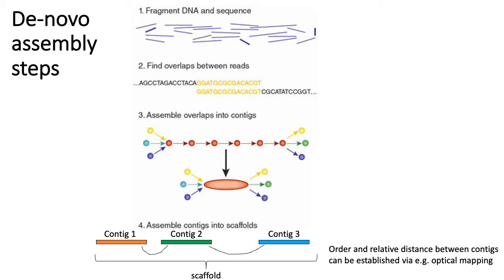The assembly problem is described by steps two through four. After you sequence your reads, you figure out which reads came from generally the same region of the genome. The underlying idea is that if two reads share a lot of sequence overlap — if the suffix of one read has a lot of overlap with the prefix of another — then those two reads are likely overlapping in the actual genome. The bigger that overlap is, the more certain you are that those two reads came from the same region.